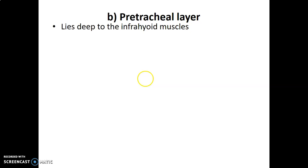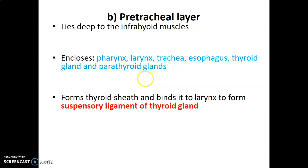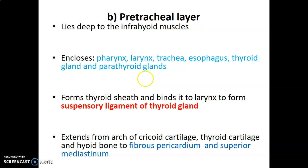The pretracheal layer lies deep to the infrahyoid muscles, in front of the trachea. It encloses the pharynx continuing as the esophagus, the larynx and its continuation the trachea, and also the thyroid and parathyroid glands. This pretracheal layer forms the thyroid sheath, which is the suspensory ligament of the thyroid gland linking the thyroid onto the larynx. It extends from the arch of the cricoid cartilage, thyroid cartilage, and hyoid bone down to the fibrous pericardium and superior mediastinum.